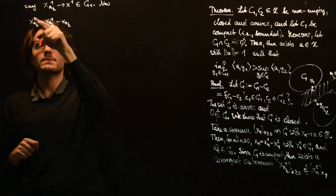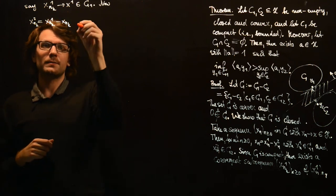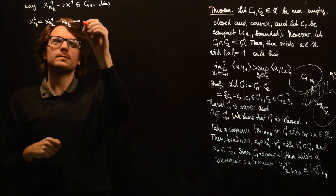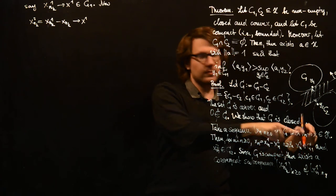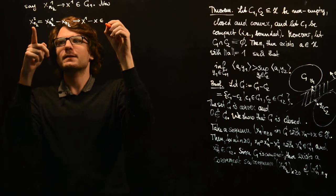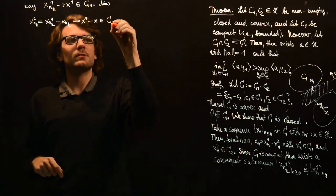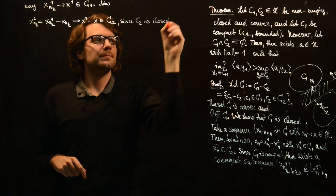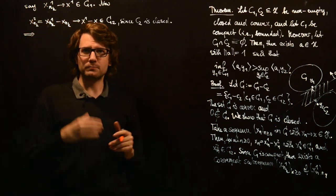Again, nk is the same subsequence we have used here to find a convergent subsequence within x1. And we know that this converges, xnk1 converges to x1 and xnk here is a subsequence of xn and therefore converges to x. And we have xnk2 is a sequence in C2, C2 is closed and therefore the limit point is also in C2 since C2 is closed.